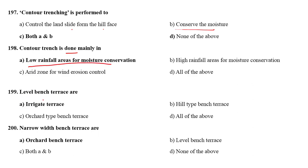Level bench terraces are also called irrigated terraces. Narrow width bench terraces are also known as orchard bench terraces.